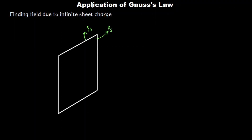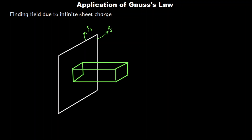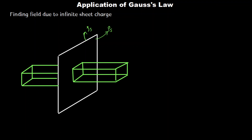Now let me choose the best suitable Gaussian surface. I would like to choose a rectangular box of some area, length and breadth. This sheet of charge is cutting that rectangular box — meaning this rectangular box is passing through the sheet. You can see that some portion of the sheet is covered by this rectangular box.